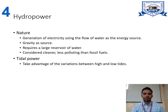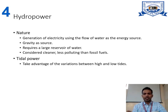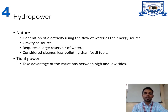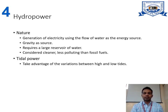Next is hydropower: generation of electricity using the flow of water as the energy source. For a hydropower plant, we create a dam. Gravity is the resource and it requires a large reservoir of water. It is considered cleaner and less polluting than fossil fuels. Tidal power is also a form of hydropower, taking advantage of the variation between high and low tides. Using the pressure difference between high and low tides, we can generate electricity.